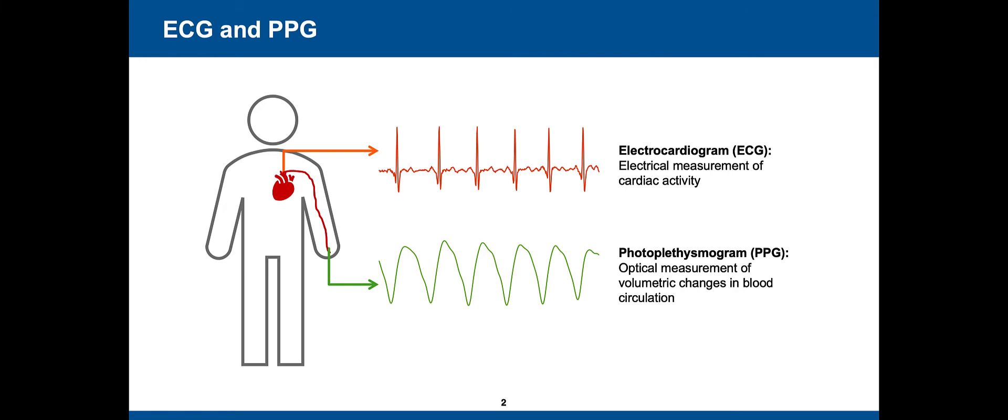ECG is the electrical measurement of cardiac activity, whereas PPG is the optical measurement of volumetric changes in blood circulation. Research has shown strong correlation between these two modalities, hence both signals are used for heart rate monitoring.